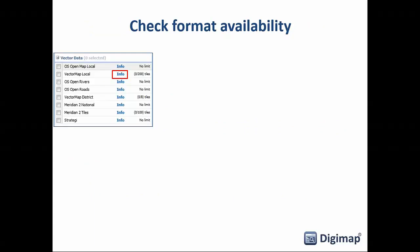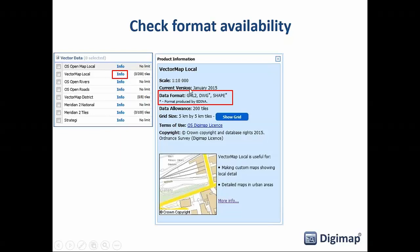To check format availability, in data download next to each product there's an info button. Clicking it brings up product information including the data format. For example, VectorMap Local shows GML, DWG, or shapefile. A star indicates we've generated that format ourselves from Ordnance Survey data. For ArcGIS use, you'd pick shapefile — much easier to use than DWG, which is for CAD tools like AutoCAD.